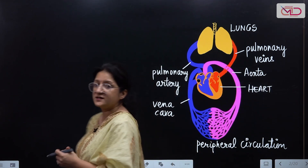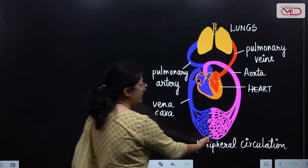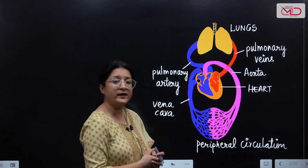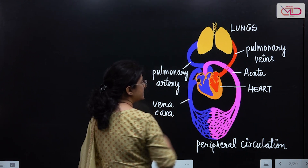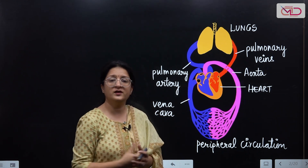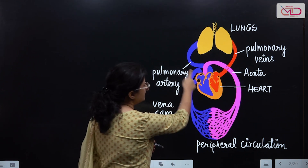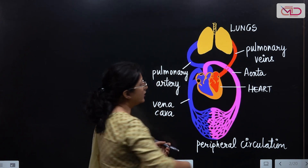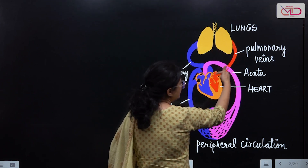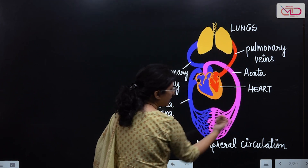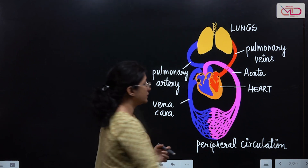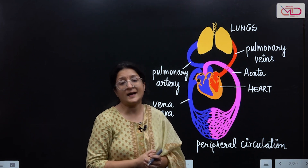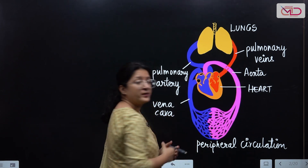We have a systemic circulation, and blood in our peripheral systemic circulation is perfusing the various tissues of the body. Blood returns from the peripheral systemic circulation by way of the vena cavas to the right side of the heart. From there, blood gets pumped to the lungs for oxygenation, and oxygenated blood returns to the left side of the heart, which then pumps it back into the peripheral systemic circulation by way of the aorta and its branches.